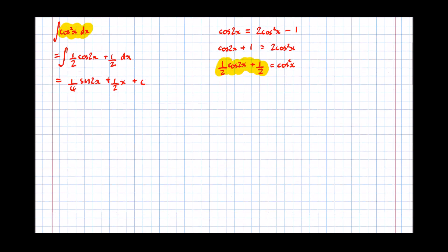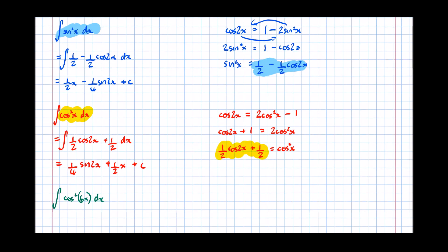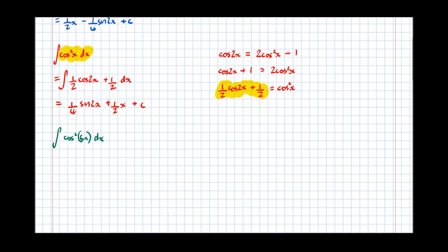We can further apply this to even more complicated integrals. Let's have a look at the integral of cos squared of 6x dx. Comparing to the last example, we always expanded double the angle — for cos squared x we expanded cos(2x). So here, we're going to expand cos of double 6x, which is cos(12x). That equals 2 cos squared of half that angle, minus 1.